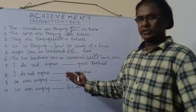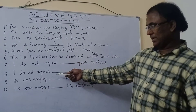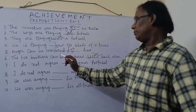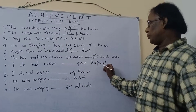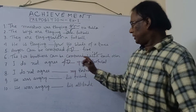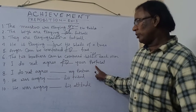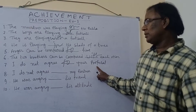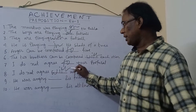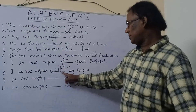Now let's move on to the next sentences. Number 7: 'Do not agree to your chosen proposal.' Number 8: 'I do not agree with my partner.' For number 7, we are indicating a proposal, solution, or something like that, so the answer is 'agree to.' This sentence is actually from a question paper from a few years ago. For number 8, we are referring to a person, so the answer is 'agree with.' Remember: 'agree to' in case of a proposal, solution, or advice; 'agree with' in case of a person.